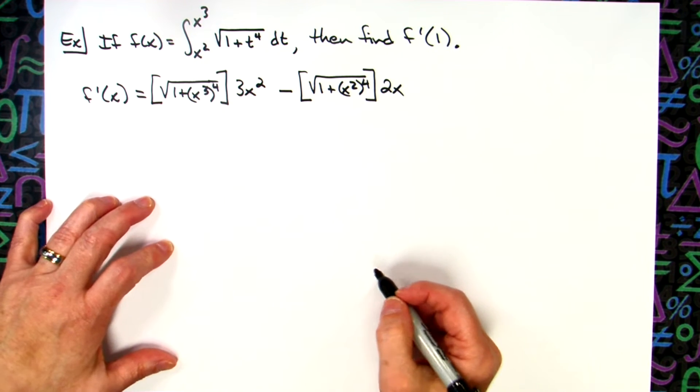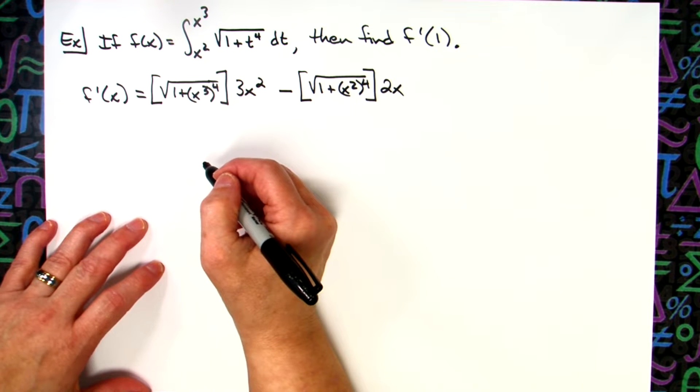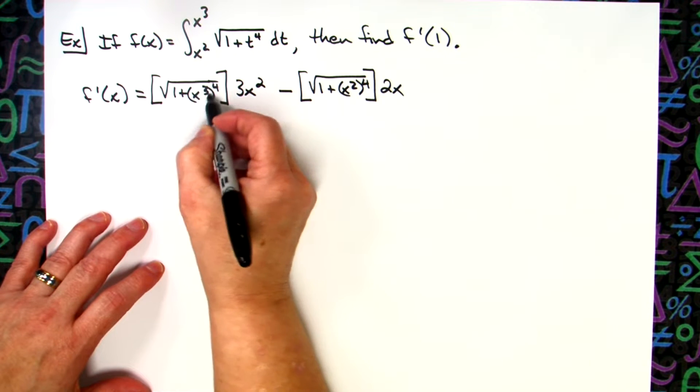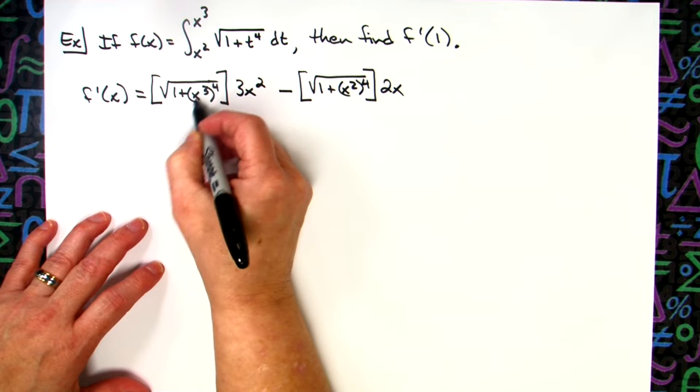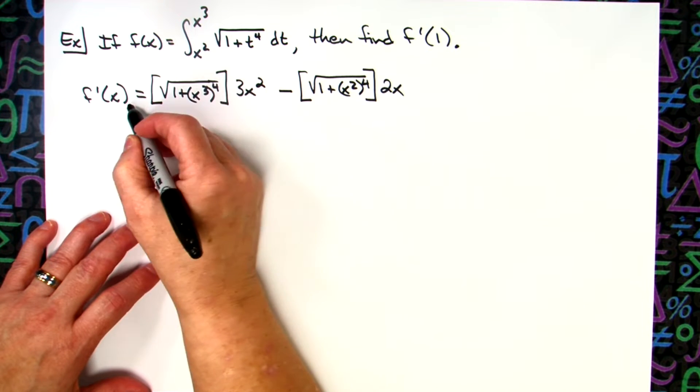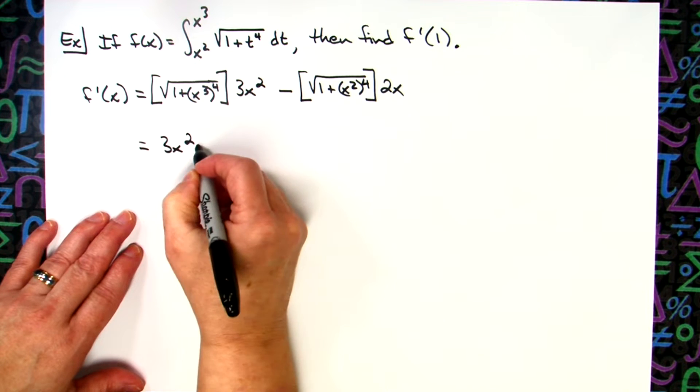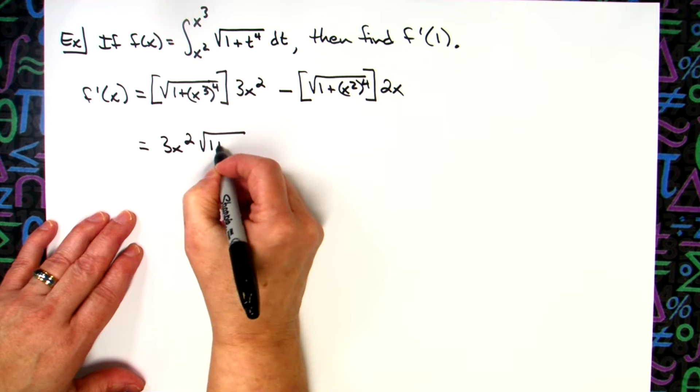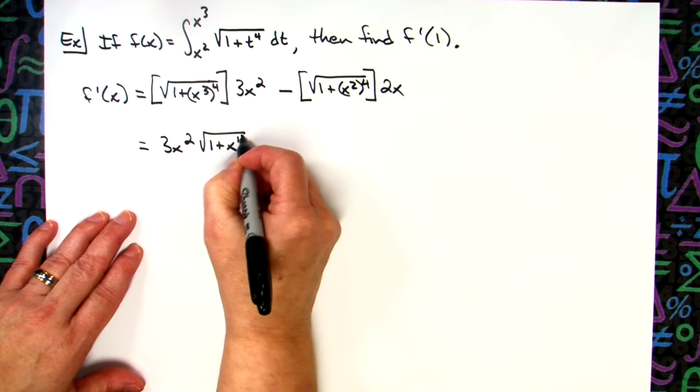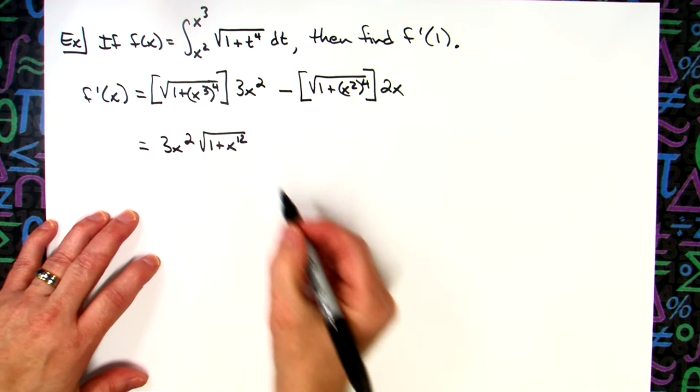Just going through and simplifying here. Let's just do this as power raised to a power. So we'll have an x to the 12th there. And then let's just move that to in front. So we'll have 3x squared times the square root of 1 plus x to the 12th, multiply those exponents.